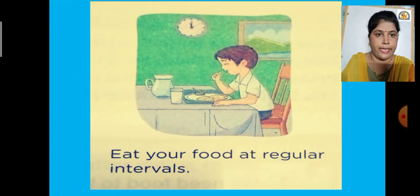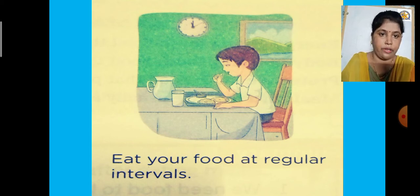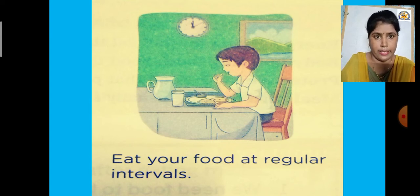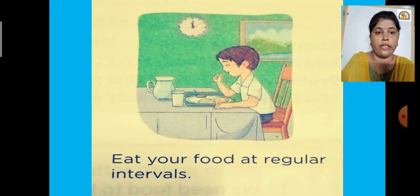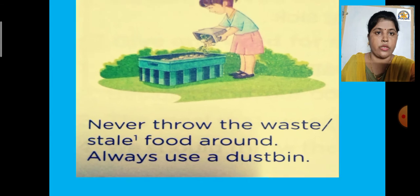The next good food habit is: eat your food at regular intervals. 'Interval' means after a particular period of time — like in the morning, then in the afternoon, then at night. So after eating, wait four to five hours before eating again. Eating at regular, fixed intervals is a good food habit.